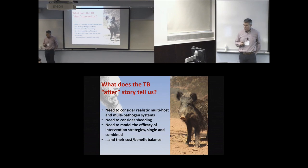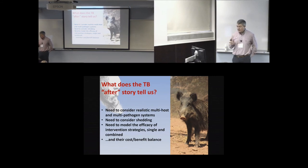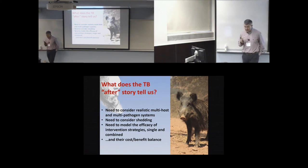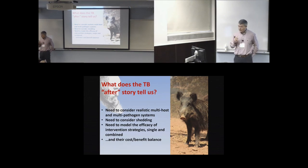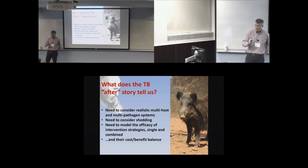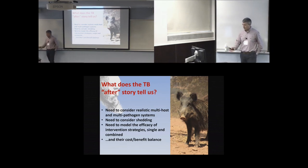Coming to the end: what does the TB story tell us? We need to consider realistic systems — and realistic systems mean multi-host and multi-pathogen, not just single pathogen or single host. We need to consider shedding; there is an imbalance in shedding that happens in many different pathogens and should clearly be included in modeling efforts. We need to model the efficacy of intervention strategies, both single and combined. And we really need to assess the cost-benefit balance — something we tend to forget, because money comes from research. But if we want this to be used at the broader scale, we really need to know the cost and the effectiveness. Thank you very much.